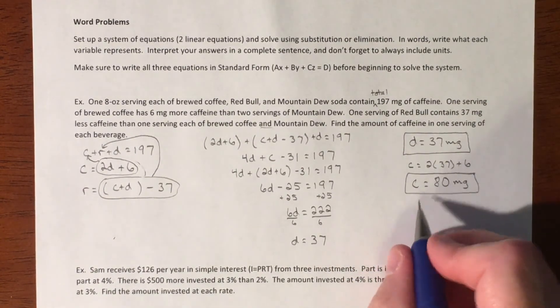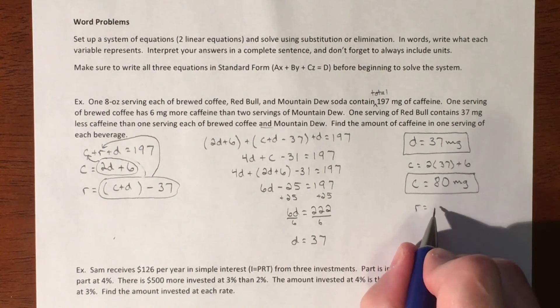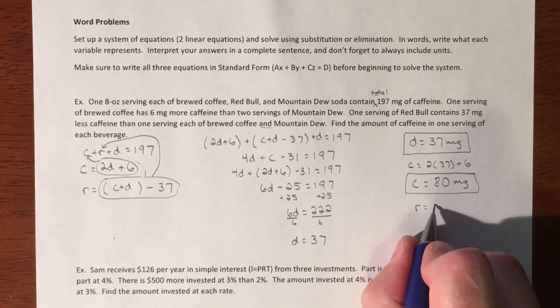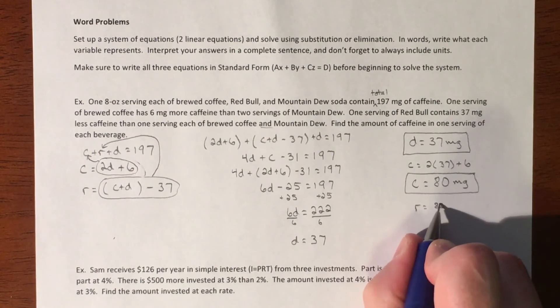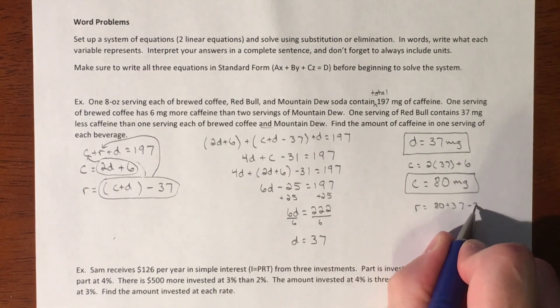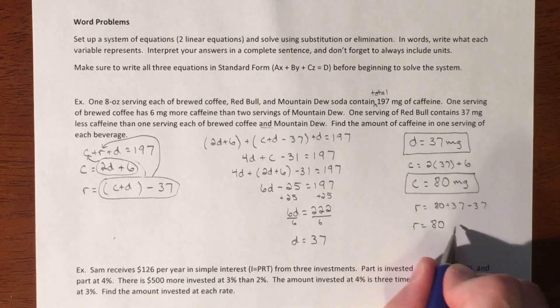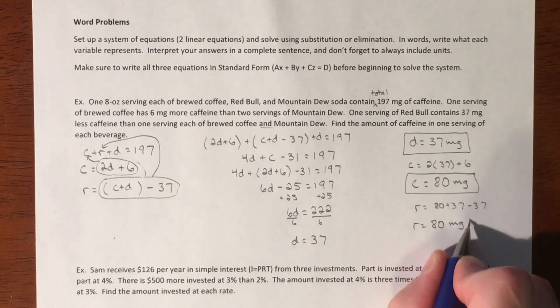And then our R, our Red Bull is C plus D. So 80 plus 37, but then minus 37. So they cancel each other out. So your Red Bull has 80 milligrams.